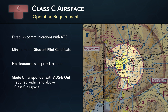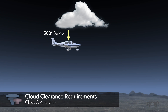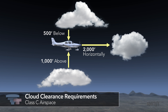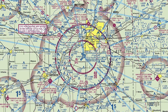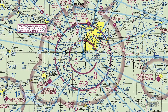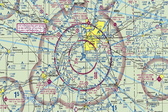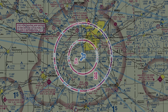A transponder with altitude reporting and ADS-B out capability is required within and above Class C airspace. For VFR flight, a minimum visibility of 3 statute miles is required, and you must remain 500 feet below, 1,000 feet above, and 2,000 feet laterally away from clouds. You will find Class C airspace on terminal area, sectional, and low altitude en route charts. It's depicted by solid magenta circles on VFR charts.